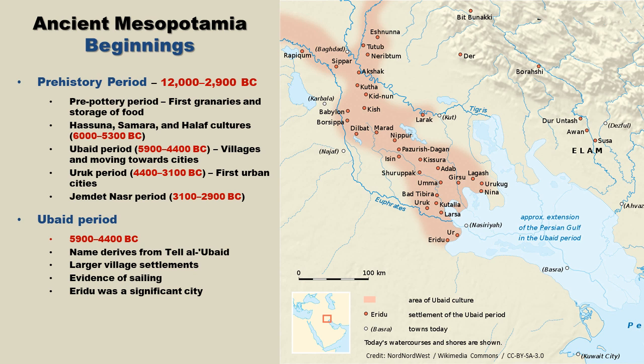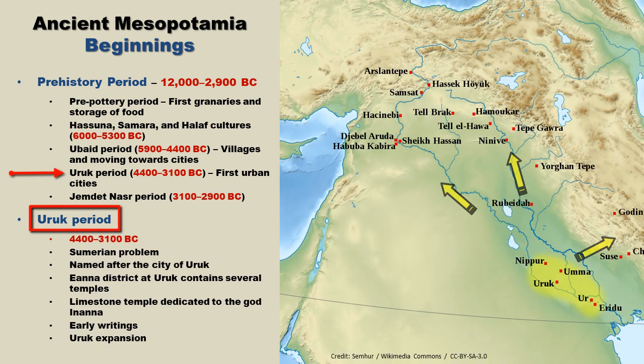The Ubaid culture was very important, as we see shared pottery types along with similar architectural plans spread across Mesopotamia. Although the Ubaid period consists mainly of small villages, there were some cities as well. The most prominent was Eridu, thought to have had a population of several thousand people. After the Ubaid period comes the Uruk period. This transition leads to one of the greatest controversies concerning ancient Mesopotamia — the Sumerian problem — which relates to the origin of Sumerian civilization. More and more archaeologists are convinced the first settlers of southern Mesopotamia were not Sumerians, but rather people from the Ubaid culture.